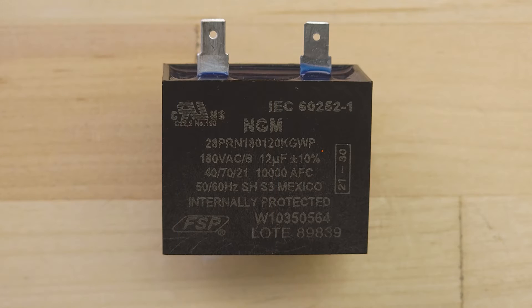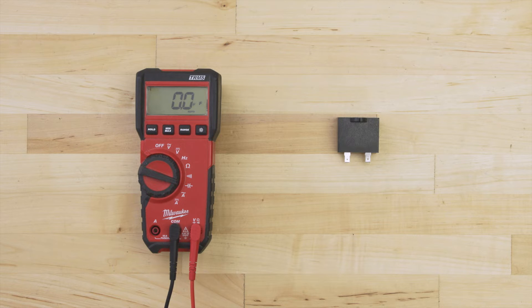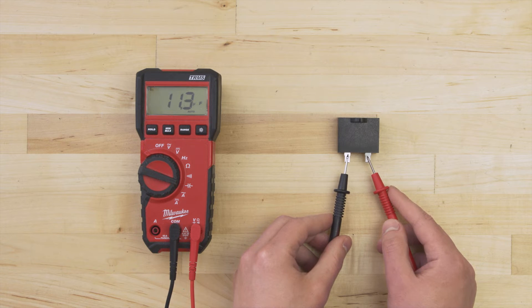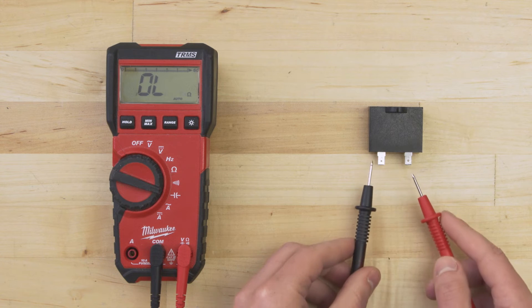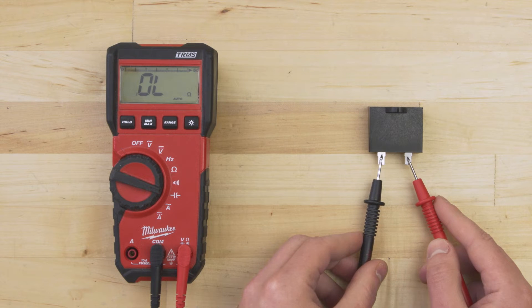On the side of the capacitor you'll see the capacitance rating in microfarads. This is what we'll be referencing. Set your multimeter to the capacitance setting. Now test between both terminals and wait 5 seconds. The reading should be within 10% of the rated value. If there is no reading and no continuity or the capacitance is outside of this range then the capacitor is faulty and should be replaced.